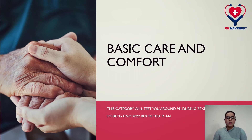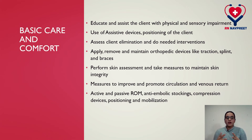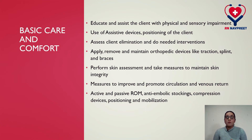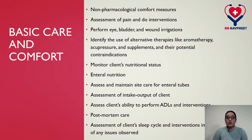Moving on, we have the fifth category: Basic Care and Comfort. From this category you can expect around nine percent to be tested during your exam. Activity statements include: educating and assisting the client with physical and sensory impairment, use of assistive devices and positioning of the client, assessing client elimination and doing needed interventions, applying and maintaining orthopedic devices like traction, splints, and braces, performing skin assessment and taking measures to maintain skin integrity, measures to improve circulation and venous return, active and passive range of motion, anti-embolism stockings, compression devices, positioning, mobilization, and non-pharmacological comfort measures.